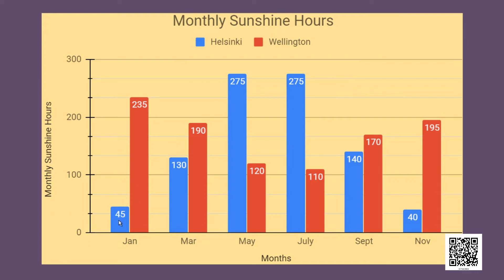For Helsinki, in the starting of the year, the hours of sunshine are very low. The sunshine hours increase as it reaches the middle of the year where it reaches the maximum, and again starts decreasing towards the end of the year. Whereas for Wellington, the city shown in red, the sunshine hours are more in the starting of the year, reducing towards the middle, and then increasing again towards the end. Observe the V shape for Wellington versus the inverted V shape for Helsinki. You can see how two different cities near the North and South Poles have very different patterns of sunshine throughout the year.